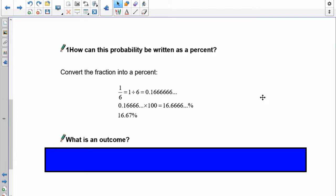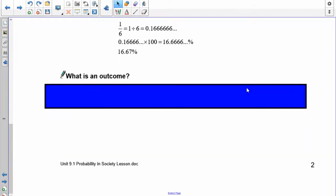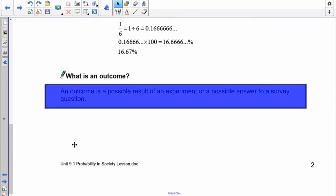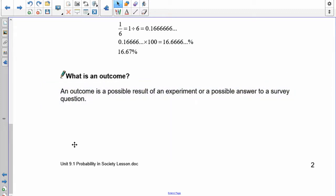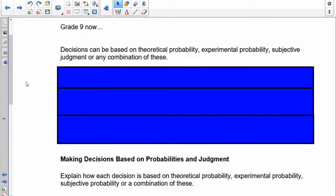Now, that's what probability is. Now, some of the other terms we need to know about are, what is an outcome? An outcome is the possible result of an experiment, or of an event. So it wants to know, what do you get when you roll a die? So the four would be your outcome.